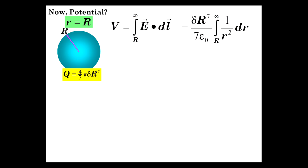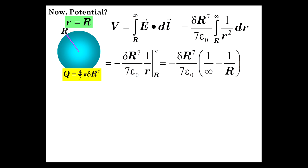The E-field was just determined: δR⁷ / (7ε₀r²). We carry out the integral: −δR⁷ / (7ε₀) times 1/r evaluated from R to infinity gives us 1/∞ minus 1/R. The potential of this sphere with respect to infinity is δR⁶ / (7ε₀).